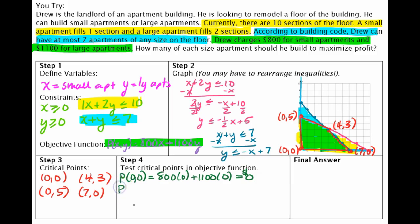For the next one, let's see. Zero five. So if I sold or if I rented out zero small apartments and seven large apartments, I would make $7,700.